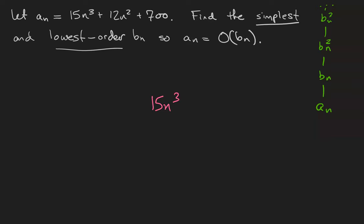You may also remember that the whole big O definition is based on a constant multiple, so it really doesn't matter what constant multiple is on the outside of the function. So therefore our desired bn is just n cubed. In other words, an is big O of n cubed.